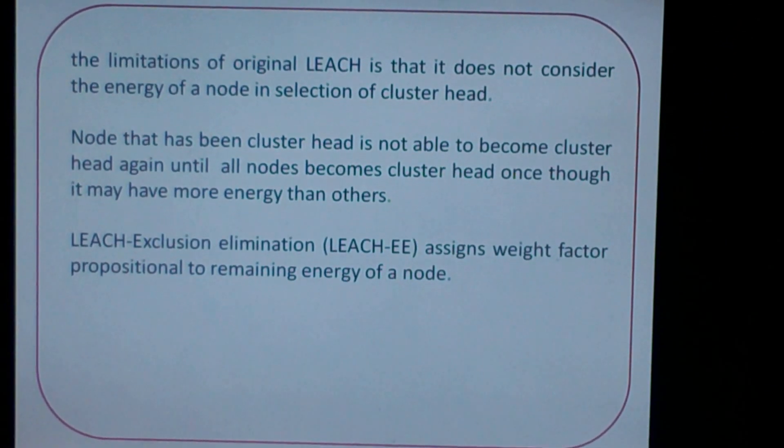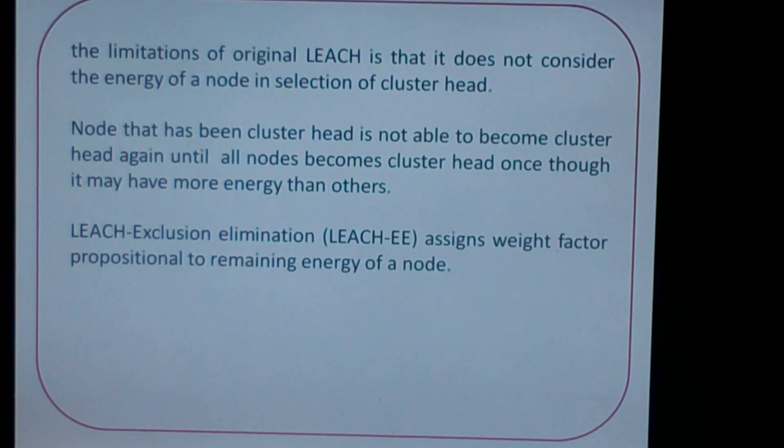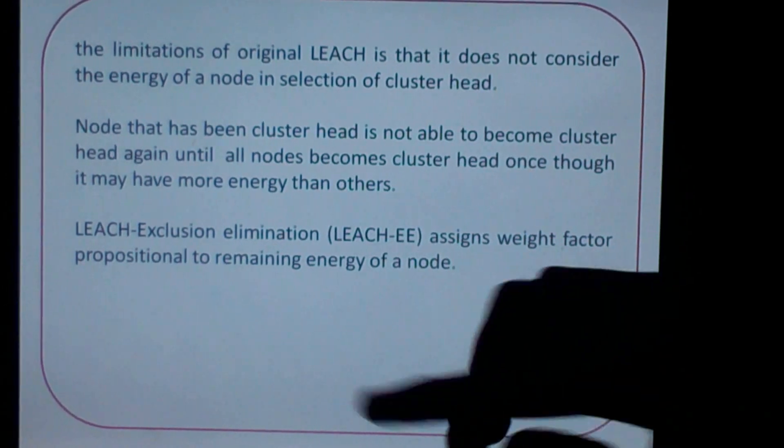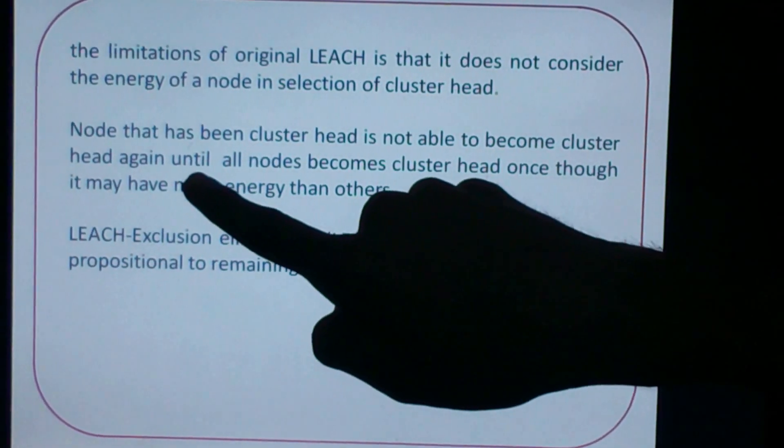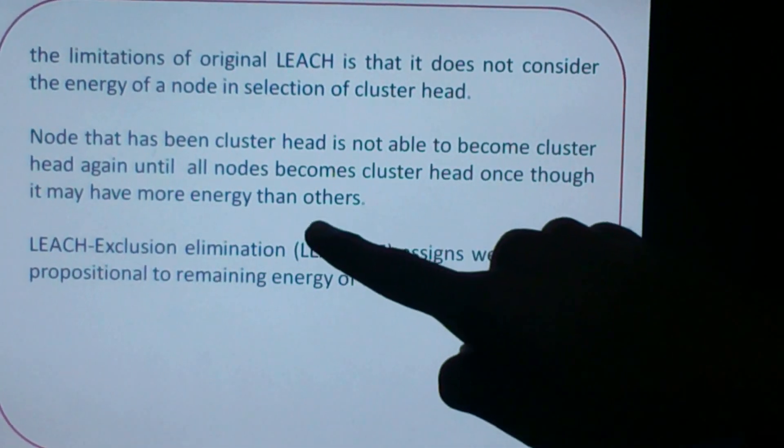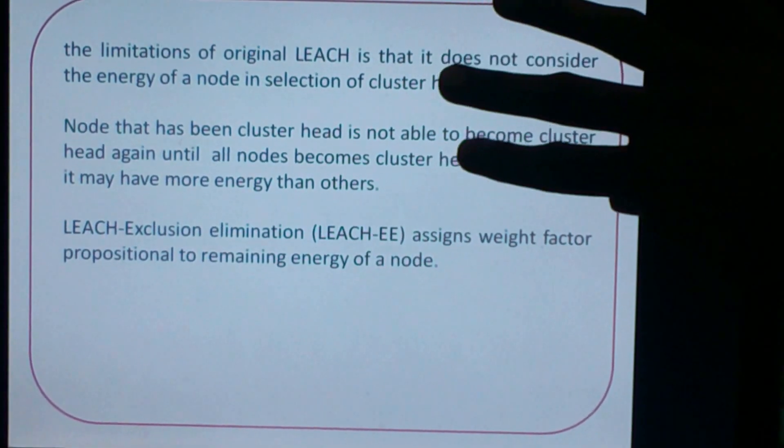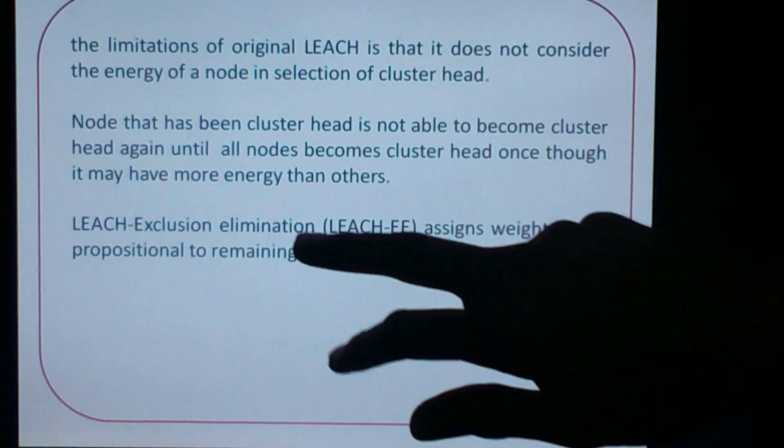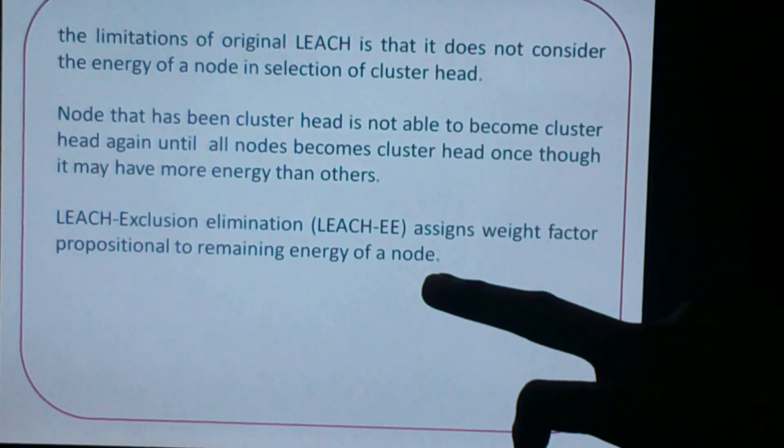The limitation of LEACH is that it does not consider the energy of a node in selection of cluster head. The node that has been the cluster head is not able to become cluster head again until all the nodes become cluster head once, though it may have more energy than others. So to eliminate these kinds of drawbacks, LEACH-EE assigns the weight factor proportional to the energy of the node.